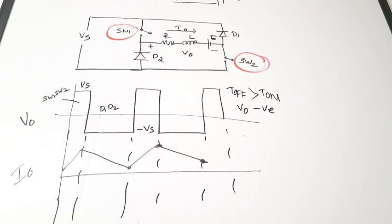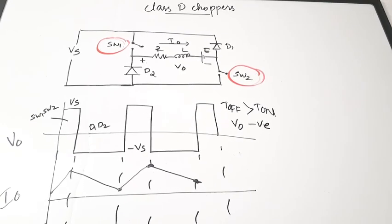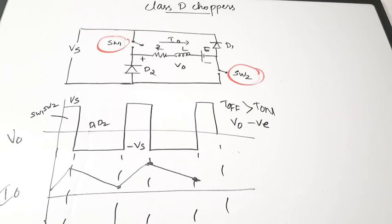So the output voltage of a class D chopper depends on the T_on and T_off times of the switches or thyristors. In this video we have discussed about class D choppers, completing our coverage of all choppers: class A, B, C, D, and E. All circuits use similar elements but the connections vary, and based on those connections the nature and direction of output voltage and current change. Please give a thumbs up and share, and check the power electronics playlist for more videos.